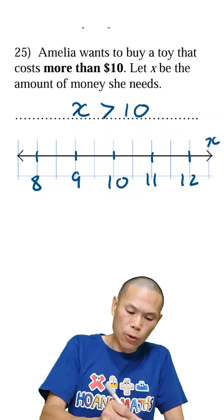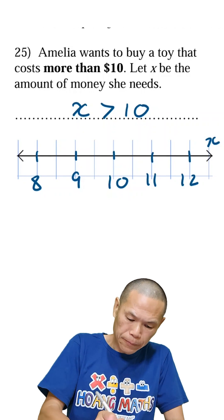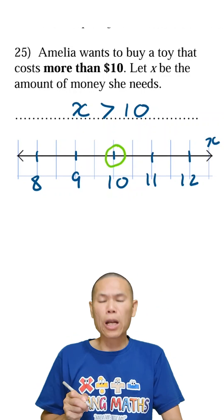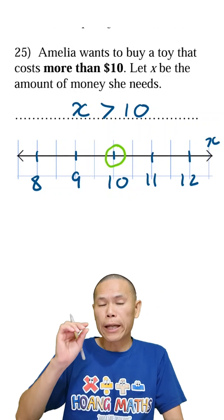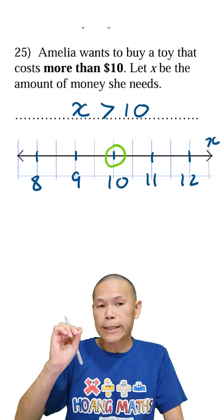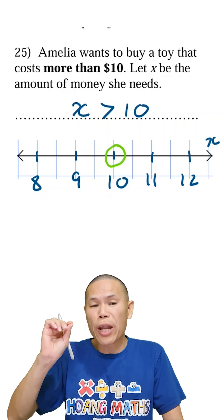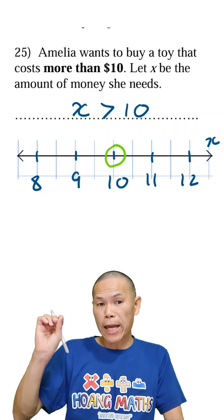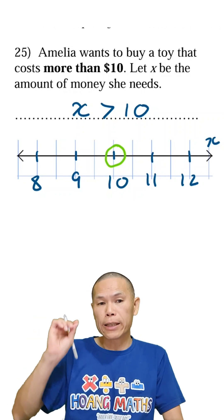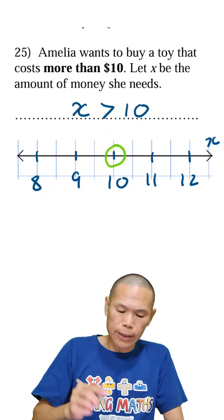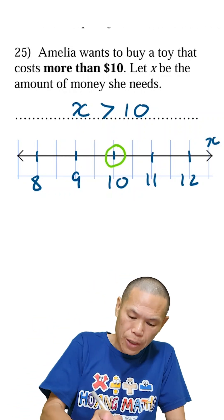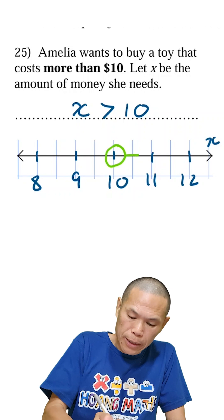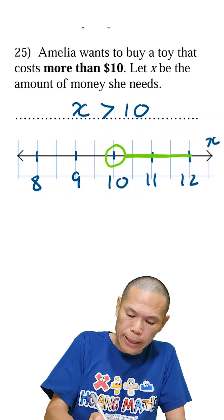Then we circle 10 on the line. Greater than 10 means all the numbers on the right hand side of 10. So we draw an arrow going right — all these numbers are greater than 10.